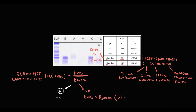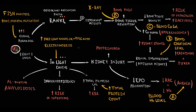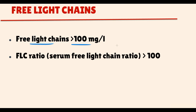A significantly abnormal free light chains ratio occurs due to plasma cell disorders in which plasma cells secrete only one type of free light chain. An additional criterion for multiple myeloma is a serum free light chains ratio greater than 100.